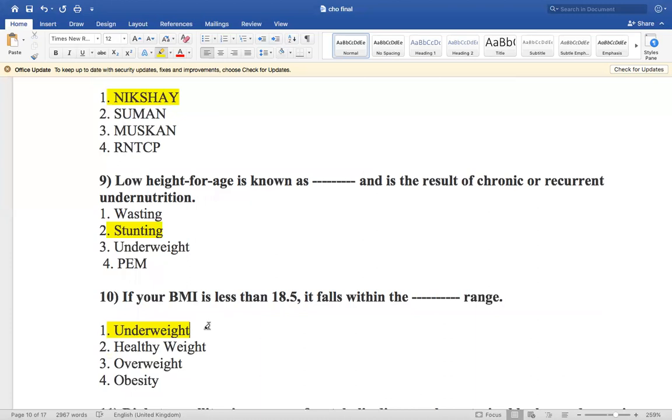Basically, BMI, how do we calculate it? It is weight in kg divided by height in meter square. And there are some classifications. If the BMI is less than 18.5, it is underweight.